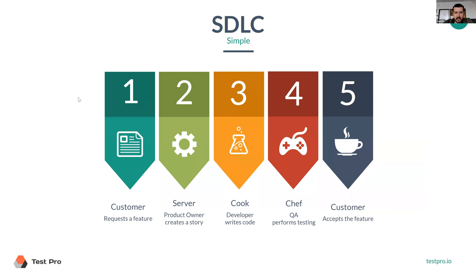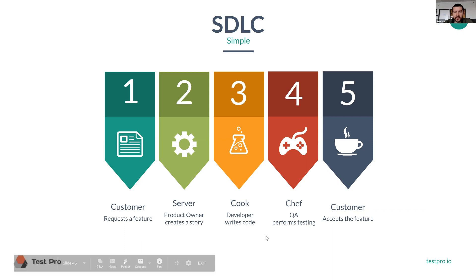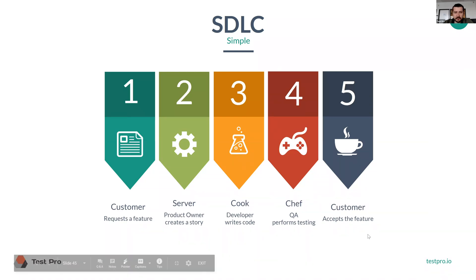So to summarize: first, request a feature; then the product owner creates a story; developers write code; QA performs testing; and it goes back to the customer who accepts it. This is, in short, the software development life cycle.